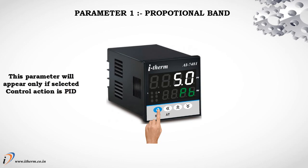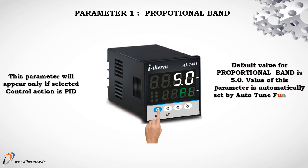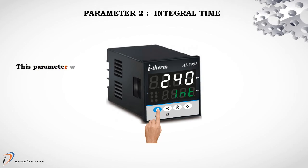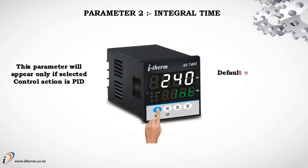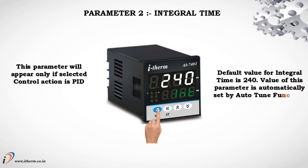Parameter 1: Proportional Band. This parameter will appear only if the selected control action is PID. Default value for proportional band is 5.0. Parameter 2: Integral Time. This parameter will appear only if the selected control action is PID. Default value for integral time is 240. The value of these parameters is automatically set by the Auto-Tune function.